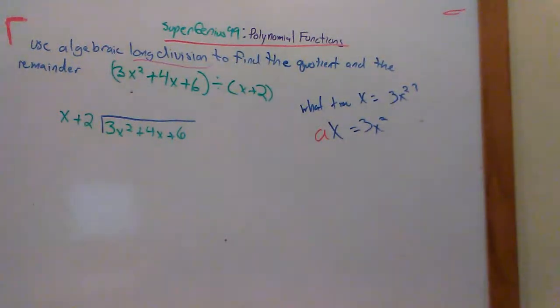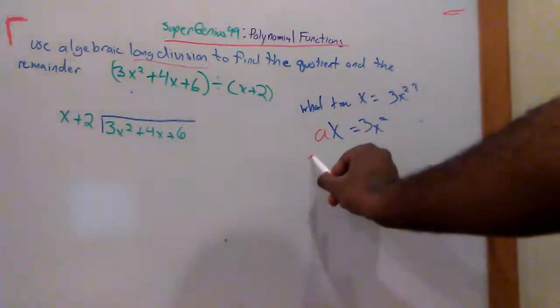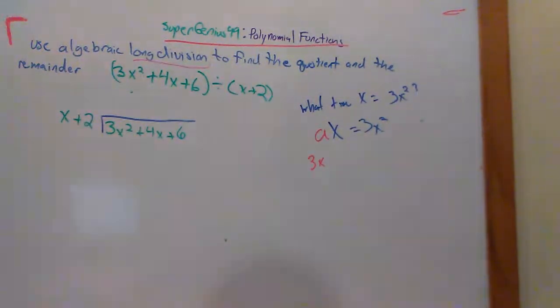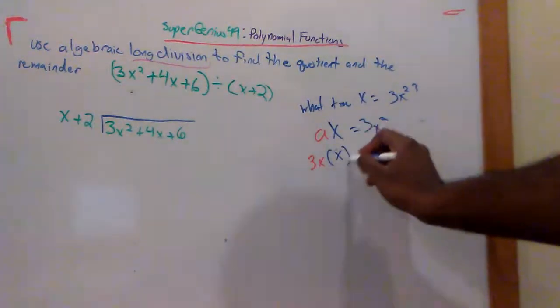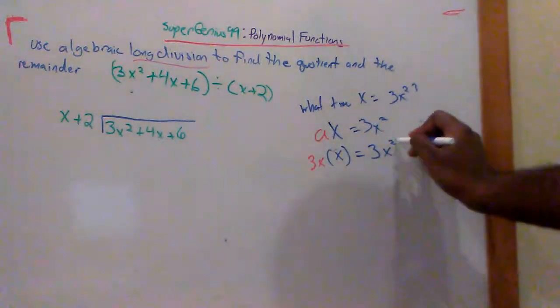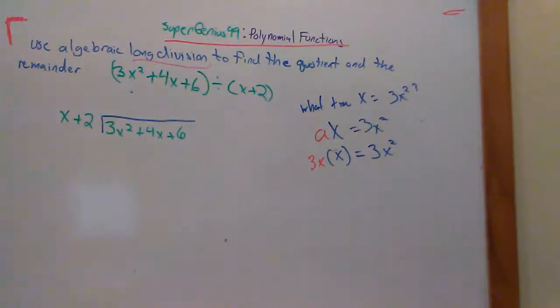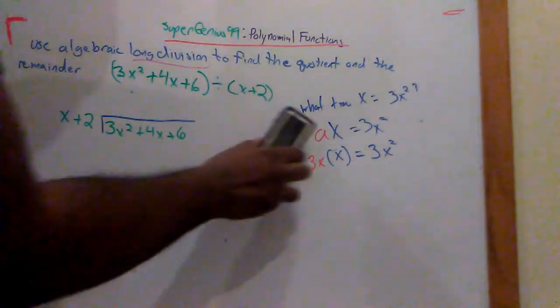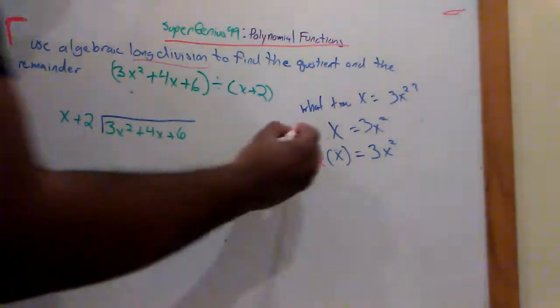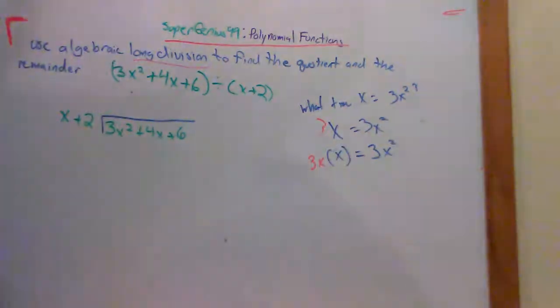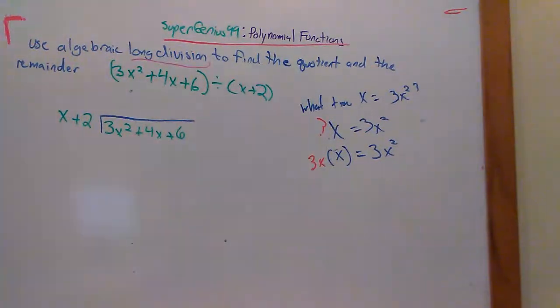And you can look at that and just say the answer is 3x times x gives you 3x squared. Now, I know I put an a there. That a was to represent a variable. If it makes more sense, let's put a question mark there. So some variable times x equals 3x squared, and that is 3x. So we figured that out.